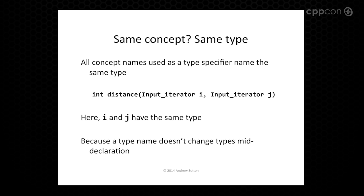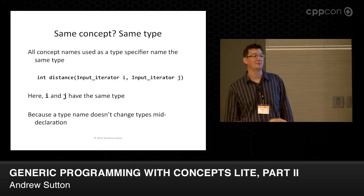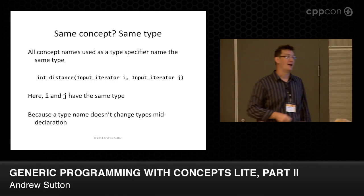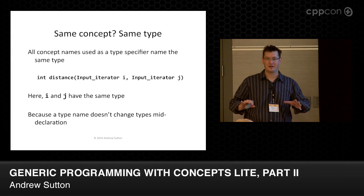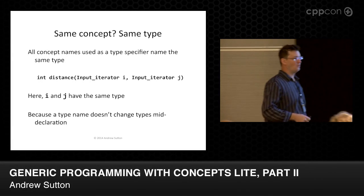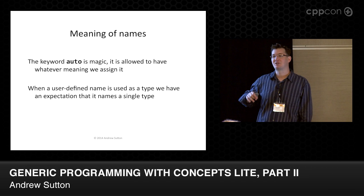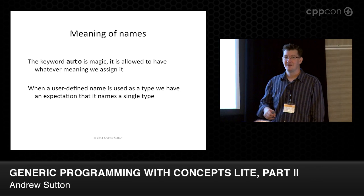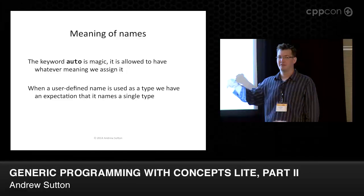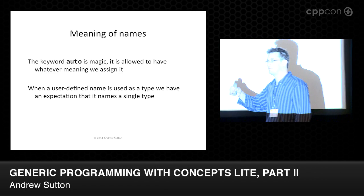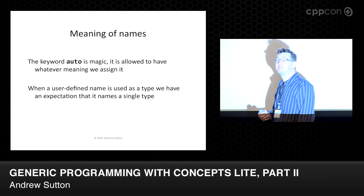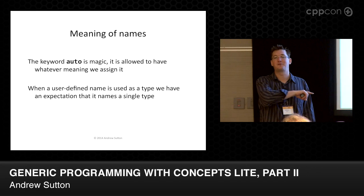One last thing I'm going to get a bunch of questions on: we have a rule that if you declare two parameters with the same concept name, they have the same type. I know you think auto doesn't work that way, so why doesn't this follow the same rule? Auto is magic and we can define it to have whatever meaning we want. When a user-defined name is used as a type, you generally don't expect that type to change mid-declaration. If I say void f(int, int), the name 'int' doesn't have different meanings between the first parameter and the second. So this rule exists specifically to improve consistency with typing — we want these to look like types when they're used.